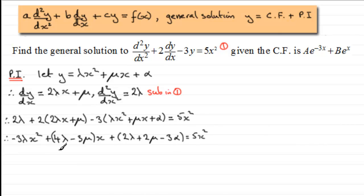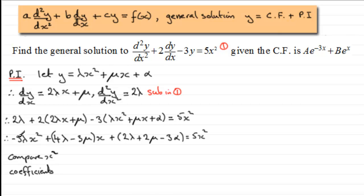Comparing x² coefficients: −3λ = 5, therefore λ = −5/3.